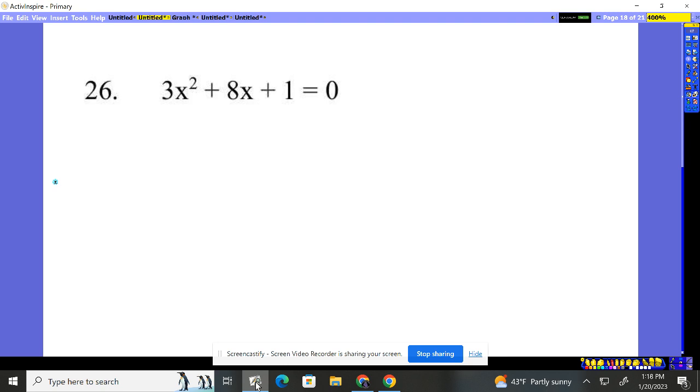Step two, I need to look at my values. The value in front of x squared is considered the a value. In front of the x is the b, and that little constant there is a c.